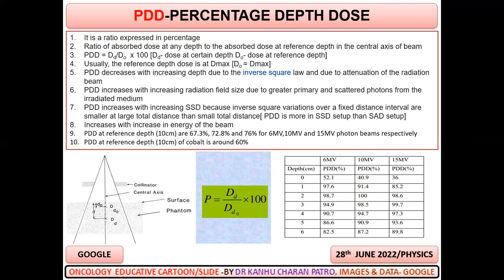PDD at 10 cm for cobalt is around 60%. Remember, it is in the central axis of the beam. You can see D0 is at D max and DD is at the reference depth. This is the surface, this is a phantom, and this is called the beam.